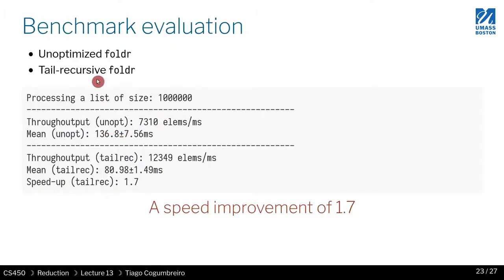If I call the unoptimized fold right and the optimized fold right, look at the speed difference. What we see is that the tail recursive version runs 1.7 times faster than the unoptimized fold right. So just by encapsulating that behavior and storing it in fold right...